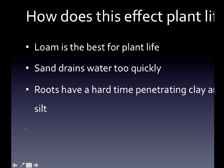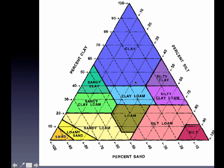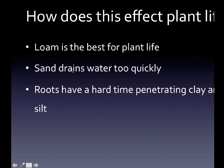How does soil texture affect plant life? Loam is the best for plant life — it's this area with a mixture of everything. Sand is going to drain water too quickly, so it's not going to retain the water necessary for plant life. And roots are going to have a hard time penetrating clay and silt, because those particles are so small they smoosh together more easily, creating a thick, dense layer that roots can't get into.